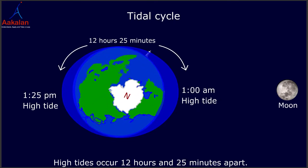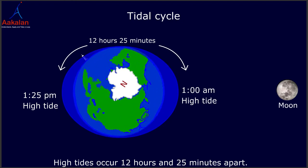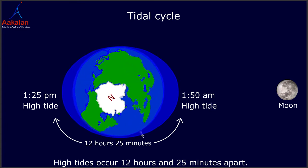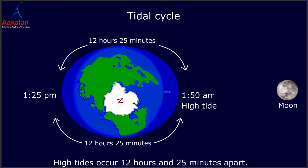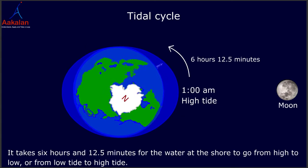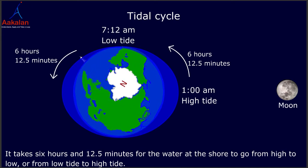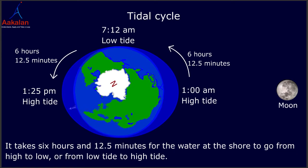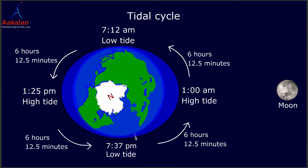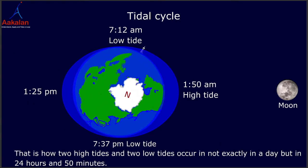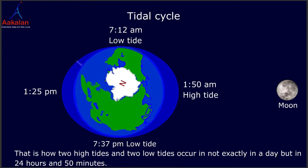High tides occur 12 hours and 25 minutes apart. It takes 6 hours and 12.5 minutes for the water at the shore to go from high to low, or from low tide to high tide. That is how two high tides and two low tides occur — not exactly in a day, but in 24 hours and 50 minutes.